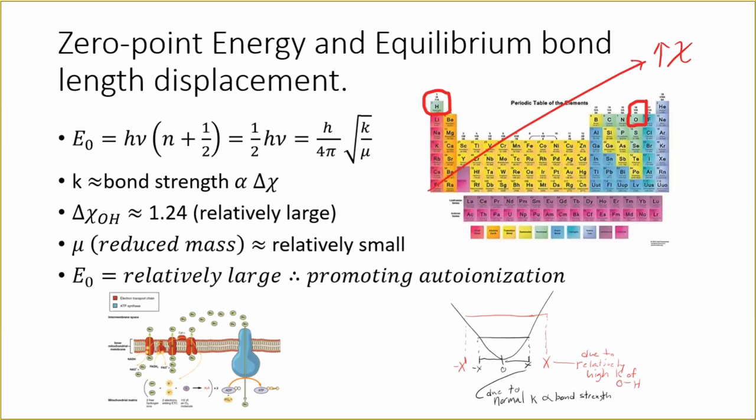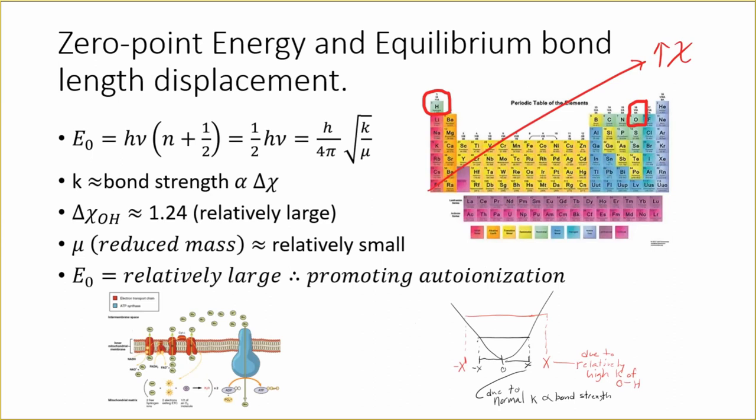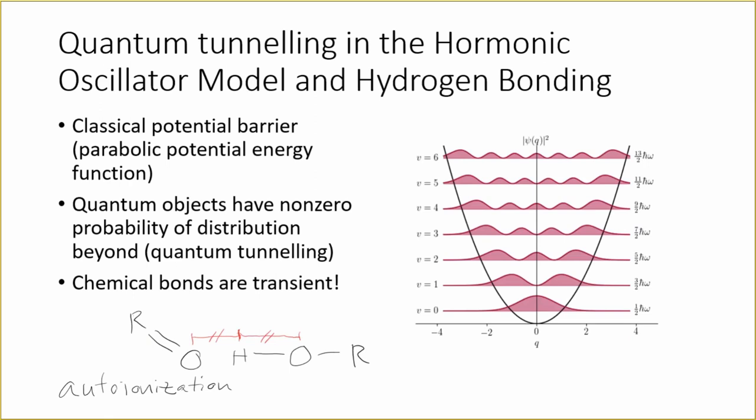And this, coupled by the oxygen-hydrogen bond's relatively large zero-point energy, promotes auto-ionization because the displacement from equilibrium bond length can get so great that the distance between the proton donor and the proton acceptor and the proton that's being shared is equivalent.